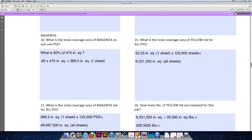But we are printing 125,000 sheets of paper, so we'll multiply 52.25 square inches times 125,000 sheets to come up with 6,531,250 square inches of coverage of yellow ink for our entire job.